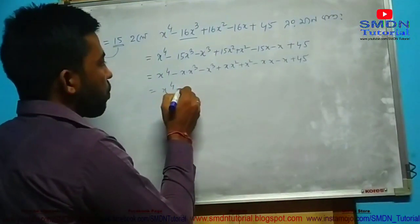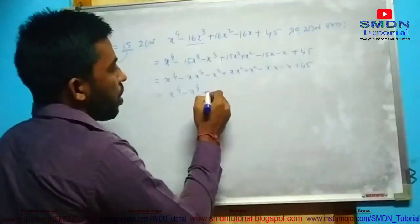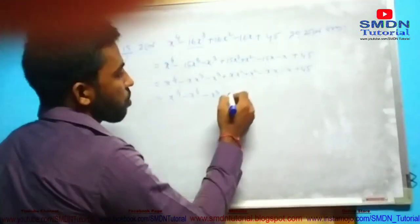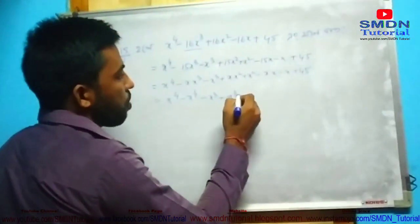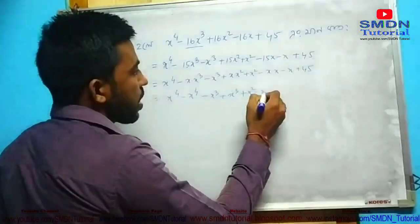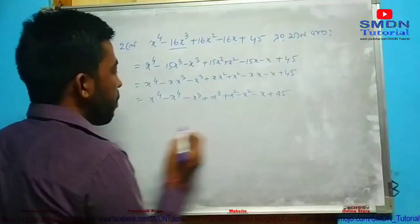So x to the power 4 minus x to the power 4 minus x cubed plus x squared minus x squared minus x plus 45.